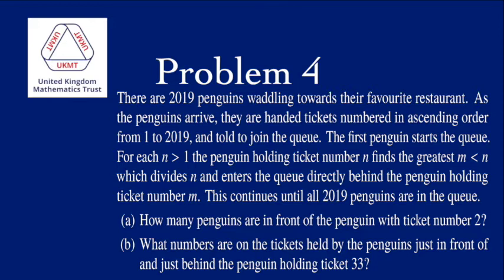As the penguins arrive, they're handed tickets numbered in ascending order from 1 to 2019 and told to join the queue. The first penguin starts the queue. For each n greater than 1, the penguin holding ticket number n finds the greatest m less than n which divides n, and enters the queue directly behind the penguin holding ticket number m. This continues until all 2019 penguins are in the queue.